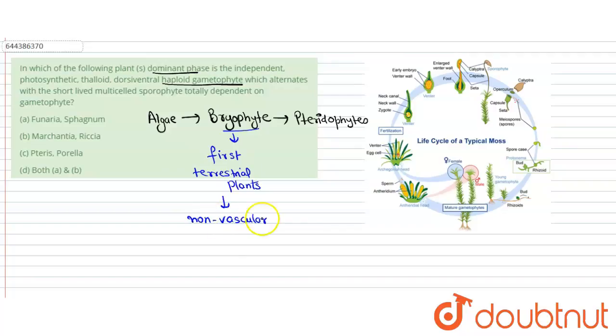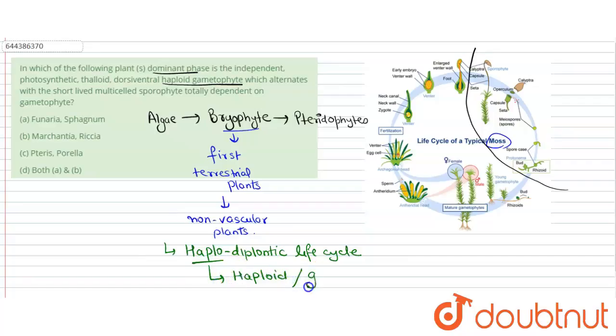They do not have xylem and phloem. And here you can see this is the life cycle of a typical moss, and moss is an example of bryophyte. So this bryophyte performs alternation of generation and shows haplodiplontic life cycle in which haploid stage is dominant, or we can say gametophyte is dominant, which means that the plants show haploid and gametophyte stage for most of the time of their life cycle.